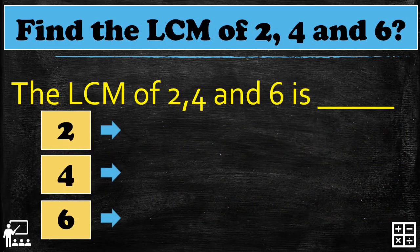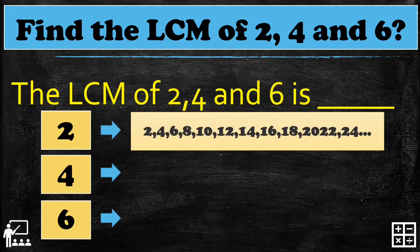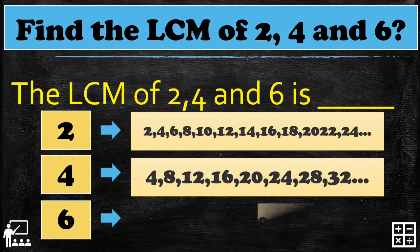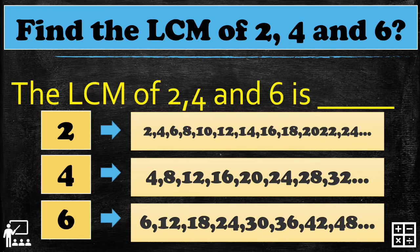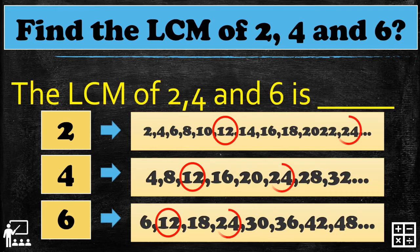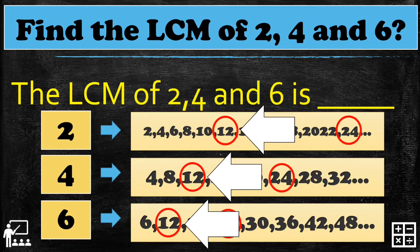Find the LCM of 2, 4, and 6. Here are the multiples of 2, 4, and 6. Let's find the common multiples in the set. The common multiples are 12 and 24 — if you extend with more numbers, you get even more common multiples. As you can see, 12 is the least or smallest common multiple of the three numbers. The LCM of 2, 4, and 6 is 12.